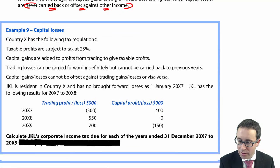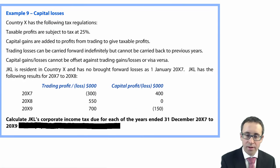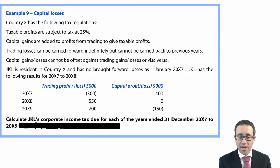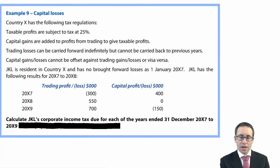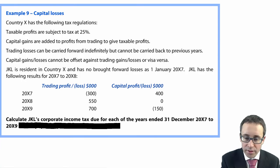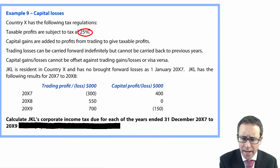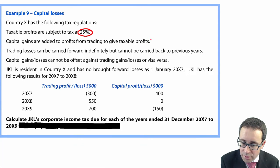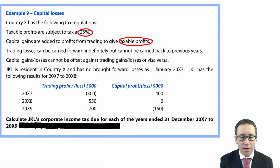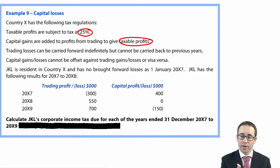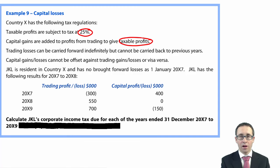Let's look at this from a conceptual and then computational perspective. The example on capital losses asks us to work out JKL's income tax due for each of the years December X7 through to December X9 — three years' worth of tax computations. Country X has the following tax regulations: profits are subject to tax at 25%; capital gains are added to profits from trading to give taxable profits; trading losses can be carried forward indefinitely but cannot be carried back; and capital gains or losses cannot be offset against trading gains or losses, and vice versa.